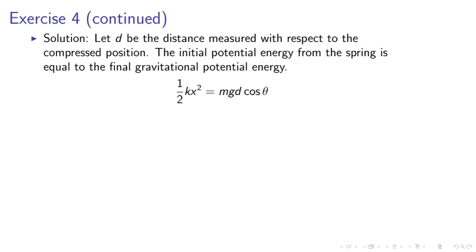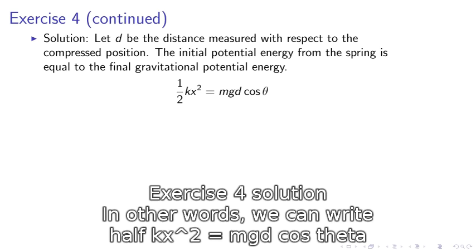Solution. Let d be the distance measured with respect to the compressed position. The initial potential energy from the spring is equal to the final gravitational potential energy. In other words, we can write half K x squared equals mgd cosine theta.